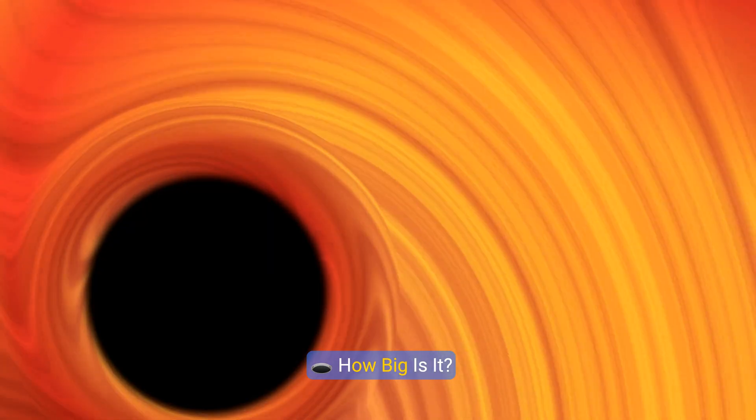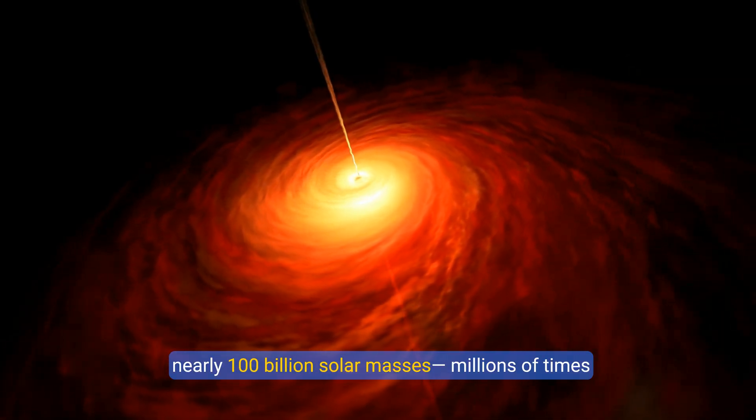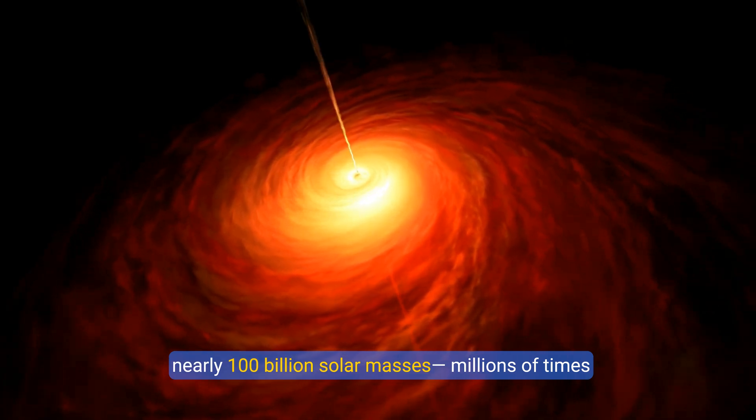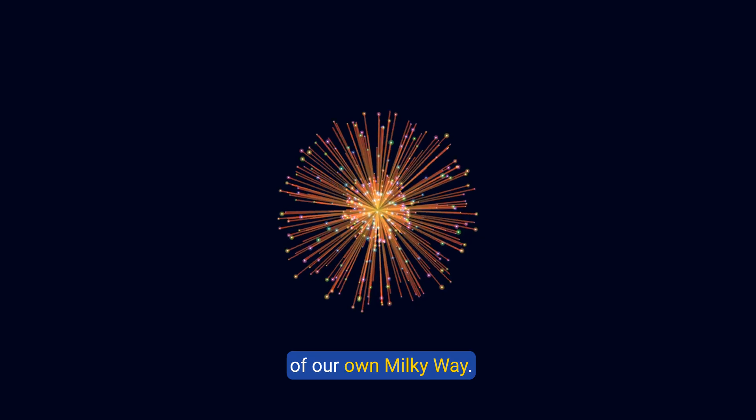How big is it? Current estimates suggest that Phoenix A harbors nearly 100 billion solar masses, millions of times greater than Sagittarius A star, the black hole at the center of our own Milky Way.